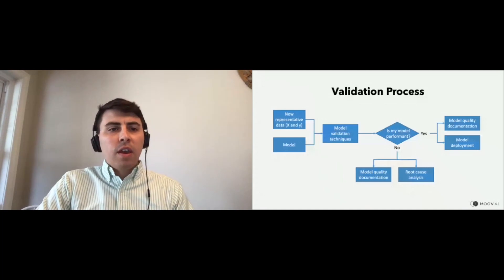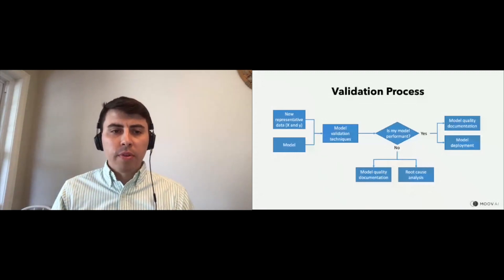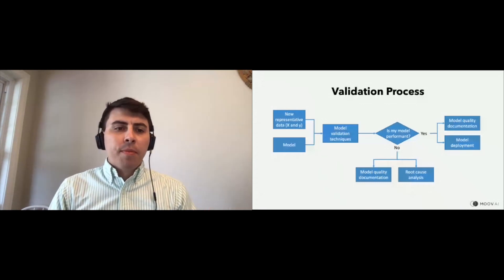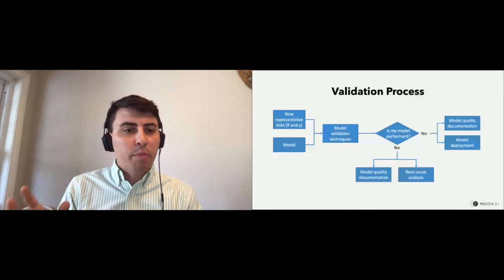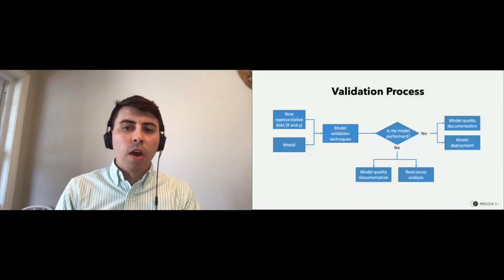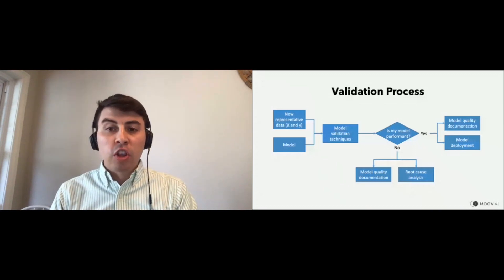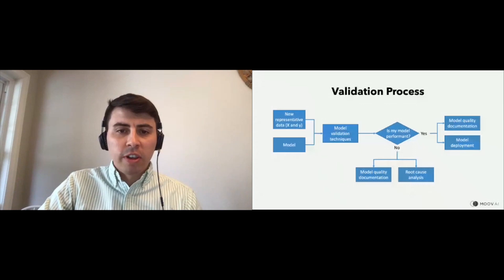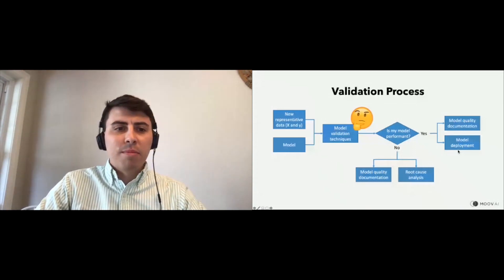If it's performant, you also want to keep track of that using documentation — for legal or internal purposes. It's always great to keep track because if there's a problem, you can say you validated it and it seemed great. Sometimes there are warnings: maybe this could be improved, but because it's an MVP, let's push it and fix it later. Then you want to create a mechanism to deploy the model automatically and keep the process as streamlined as possible.